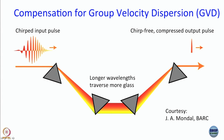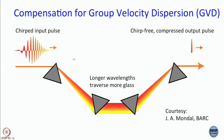Say you have a chirped pulse. On one side the wavelengths are longer (lower frequency) and on the other side the wavelengths are shorter (higher frequency). When this goes through a prism, it gets dispersed. Then you introduce a second prism facing the opposite direction with the same angles. What happens is that, for example, red travels less and yellow travels more — the path lengths differ for different colors.